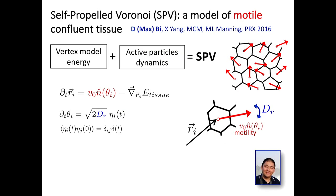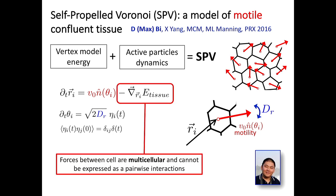We combined the vertex model energy with active particle dynamics to construct what we call the self-propelled Voronoi (SPV) model of a confluent tissue. We use a Voronoi tessellation of the plane and assign each cell a motility of fixed magnitude in a direction subject to rotational noise. The dynamics of each cell centroid is controlled by cell propulsion—with direction randomized by rotational noise—and forces obtained from the tissue energy. Importantly, these forces are multicellular: they cannot be written as pairwise additive and are not just among nearest neighbors.